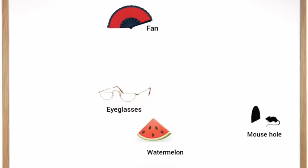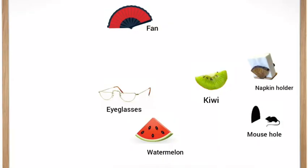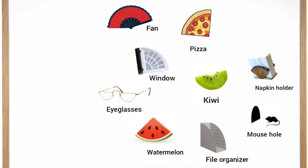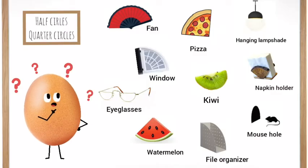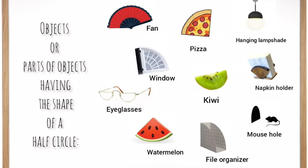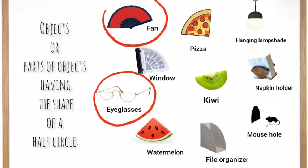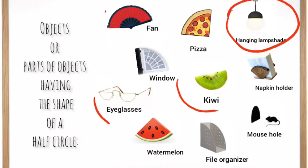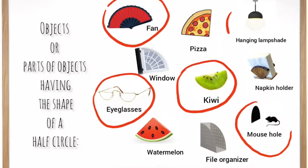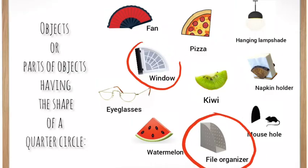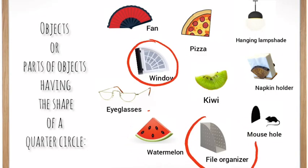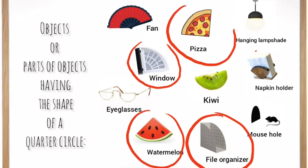For our last activity, can you classify ten distinct objects or parts of objects showing the shapes of half and quarter circles? Fun eyeglasses, kiwi, hanging lampshade, mousehole, file organizer, window, watermelon, pizza, napkin holder.